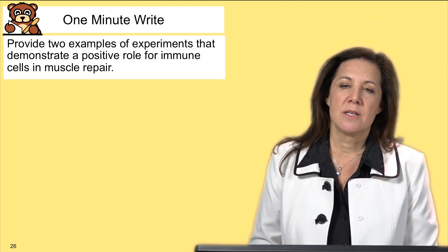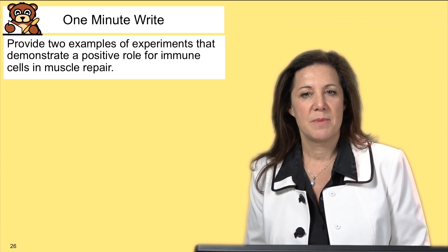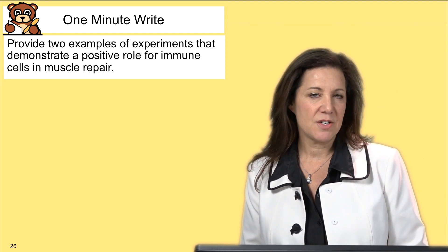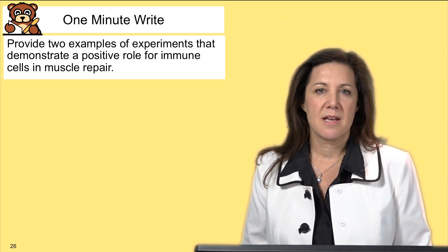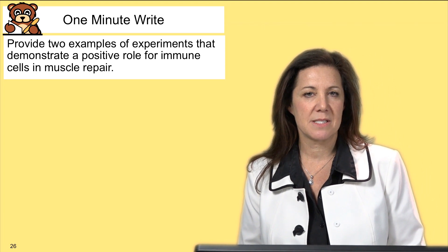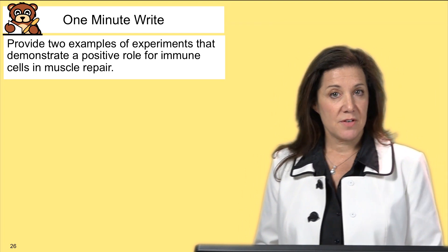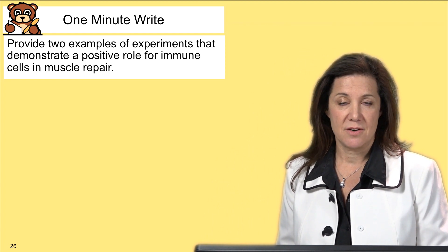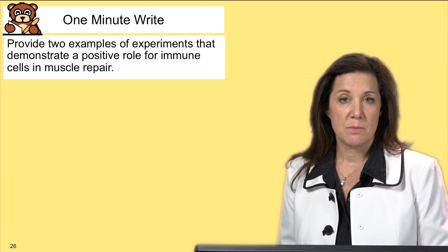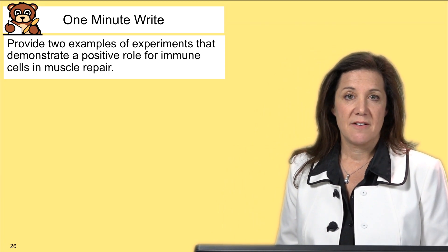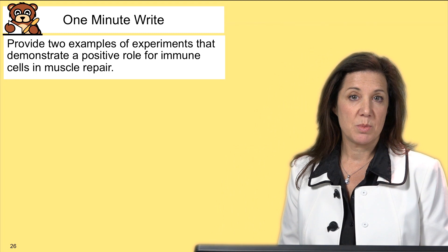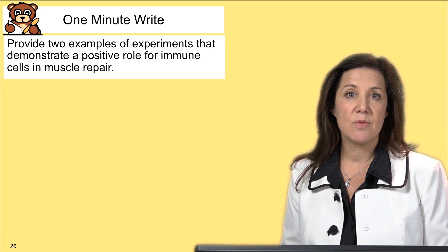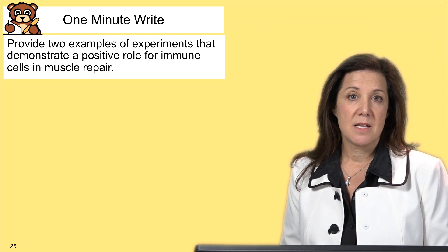Two experiments demonstrate a positive role for immune cells in muscle repair. First, the monocyte experiment showed that interfering with monocytes completely impaired repair. Second, in the double-GATA knockout mice lacking eosinophils, repair was impaired and Evans blue dye was not excluded from the muscle. These two examples illustrate that interference with either cell type impedes muscle repair.